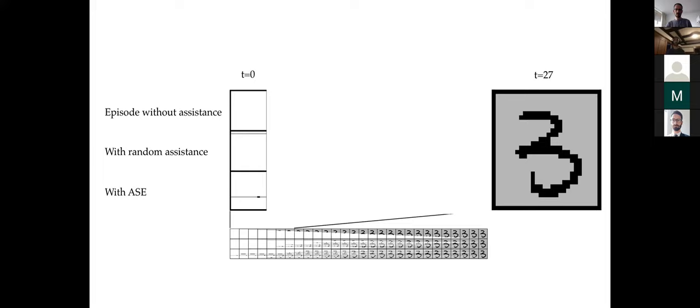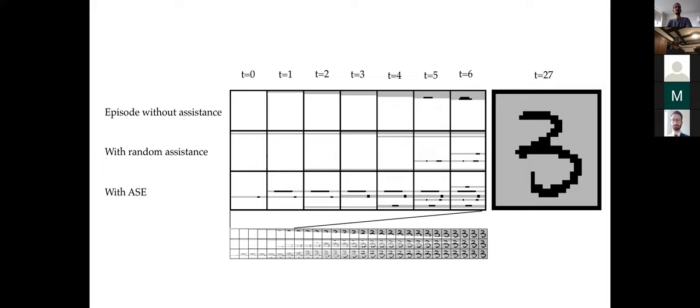Here's a step-by-step comparison. When only 25% of the image has been revealed by time step seven, the pixels revealed by our method make it easier to guess that the digit is a three. Without assistance it's awful; with random assistance it's a little better, randomly showing some uninteresting rows at the top and some interesting ones in the middle. But ACE is painting a staggered picture of the three, having learned that showing these pixels first induces the belief state that enables the user to classify the digit.